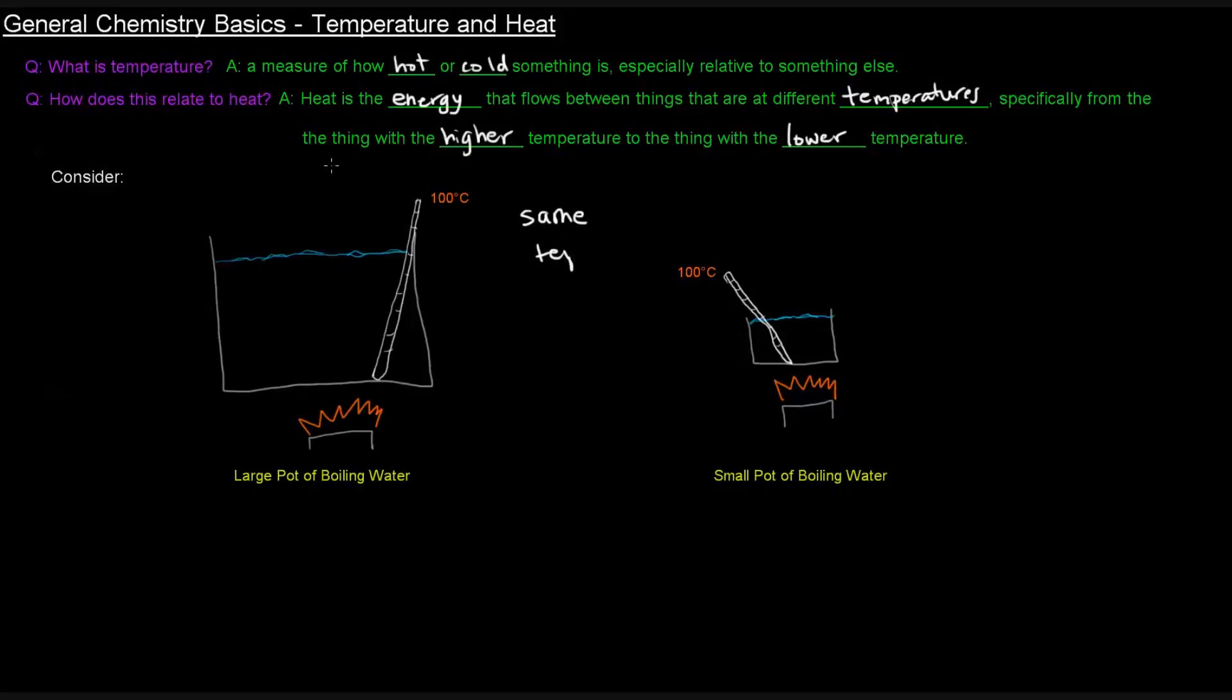So what we see here is that despite the fact that this is a small pot and this is a large pot, they are both at the same temperature. Despite their different amounts, they have the same temperature. So what that means is that temperature is an intensive property, which is something we talked about in the previous video. It's a property that is independent of the amount of substance.